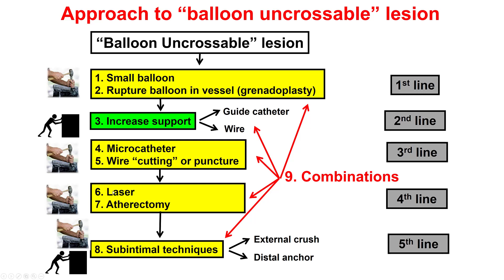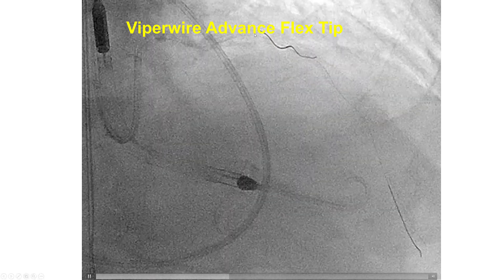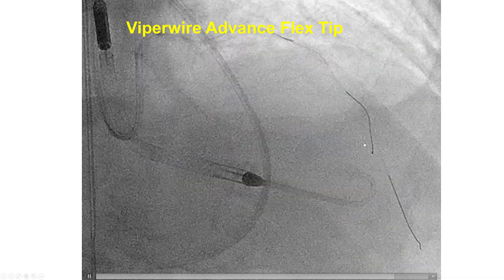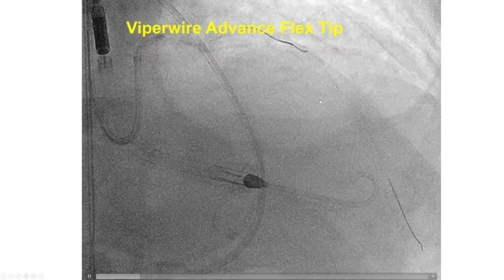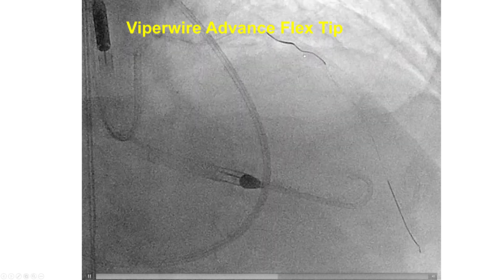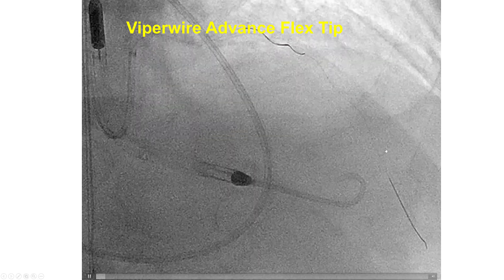The next steps would usually be laser, and if that didn't work, advance an atherectomy wire and do atherectomy. However, this technique is problematic because if you pull back the wire, you cannot get it back in and you lose your wire position. We now have a new atherectomy wire — the Viper wire flex tip — which is a 0.019" wire with much better torquing than traditional atherectomy wires such as the Viper wire advance and the Rotafloppy guidewire. By using this guidewire through the Caravel, we were actually able to successfully wire through the area of occlusion into the distal LAD.